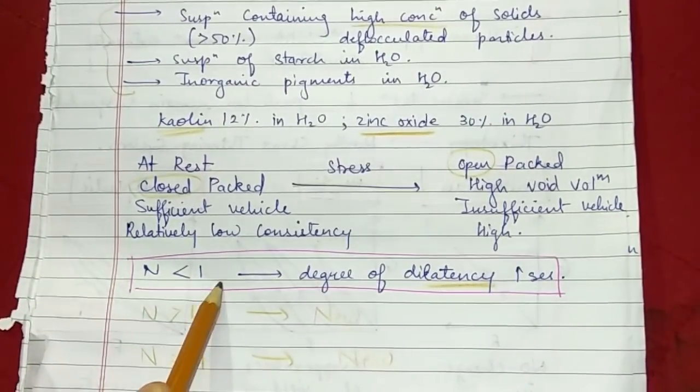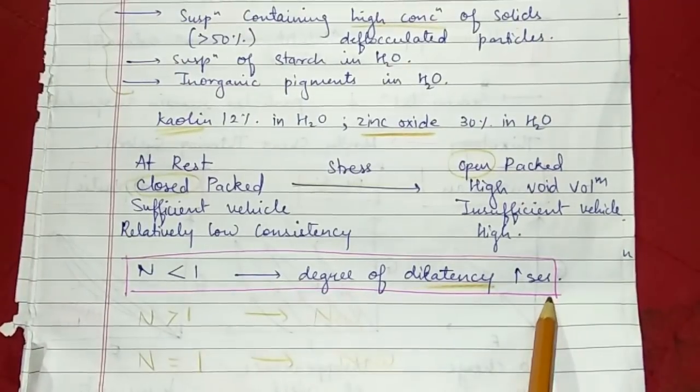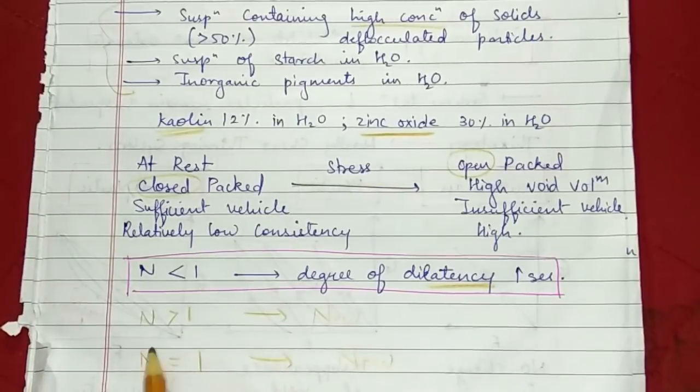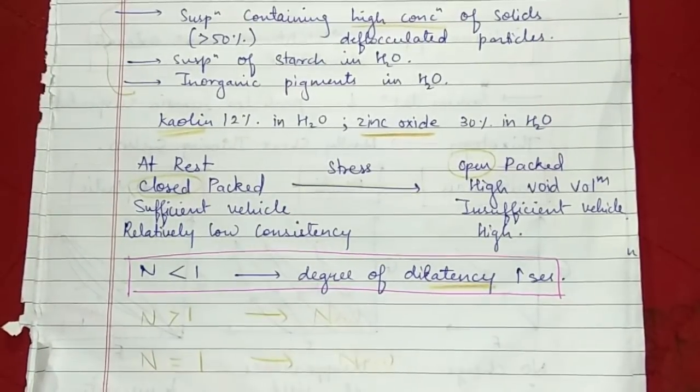When N is less than 1, dilatancy increases. When N is greater than 1, it follows non-Newtonian flow. When N equals 1, it follows Newtonian flow.